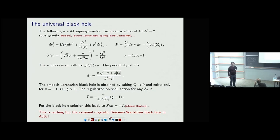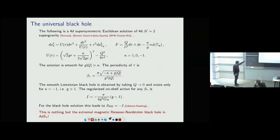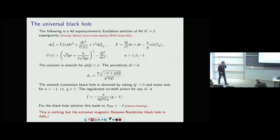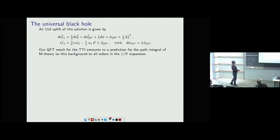I call it extremal because in the limit q→0, where I can get a good Lorentzian background, something funny happens with β — it becomes infinite. My claim is that this is the background for which this index is good for ABJM. To make a connection with 11D, I need to uplift this to M-theory. There are infinitely many uplifts: the claim to fame is that this is a solution of 4D N=2 minimal supergravity — Einstein-Maxwell theory — which admits infinitely many uplifts in M-theory where you specify an internal Sasaki-Einstein manifold.